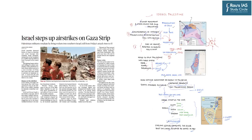The first article is from today's The Hindu: 'Israel Steps Up Airstrikes on Gaza Strip.' Israeli strikes flattened homes in Gaza on Saturday and rocket barrages into southern Israel persisted, raising fears of escalation in a conflict that has killed at least 15 people in the coastal strip. This is just one instance every week when we read about the Israel-Palestine conflict, with terms like Golan Heights, Gaza Strip, West Bank, and Israeli settlements.